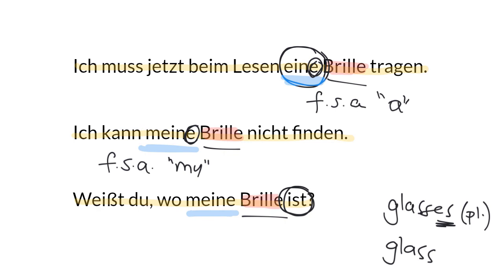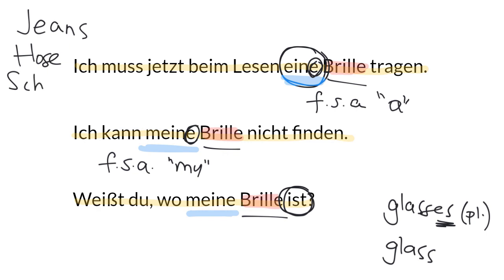German tends to do this for items of clothing or accessories that are, in fact, made of one piece. For example, jeans — we talk about eine Jeans — or Hose, a pants, or Schere, a scissors.